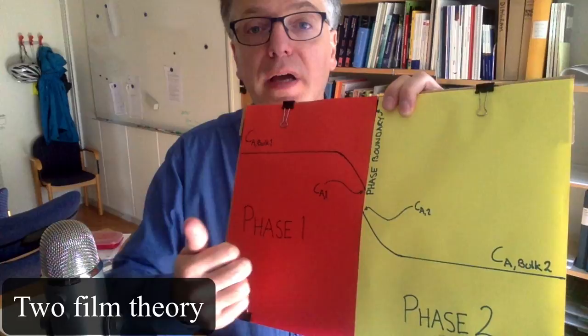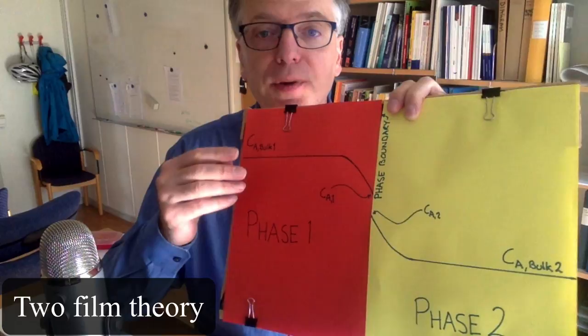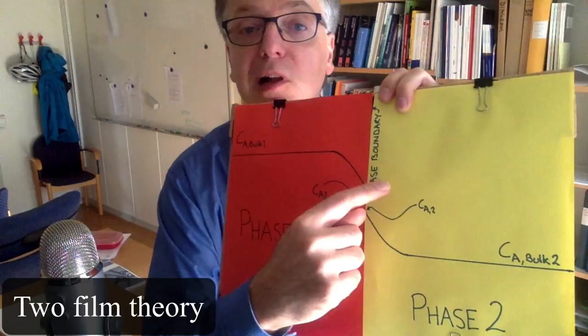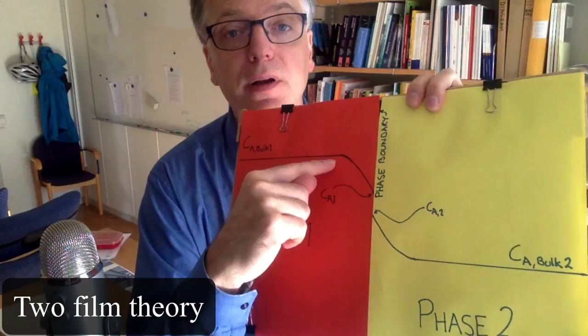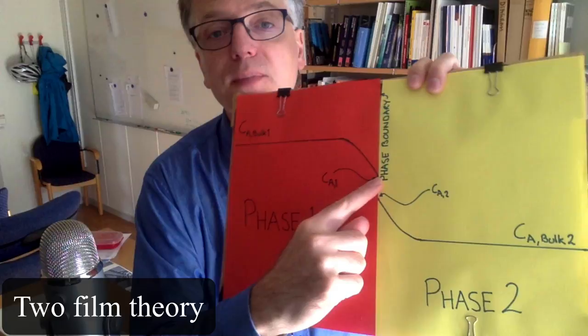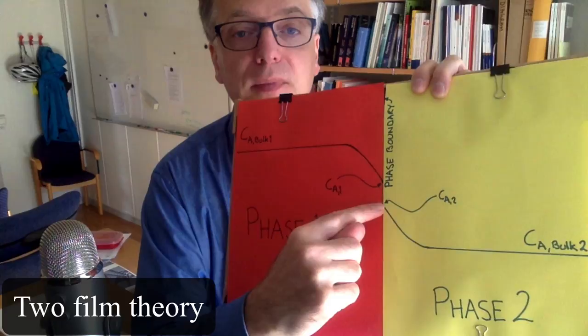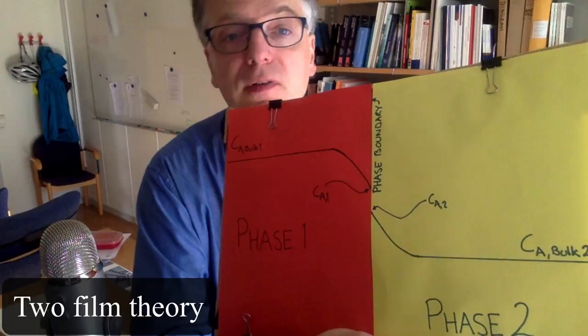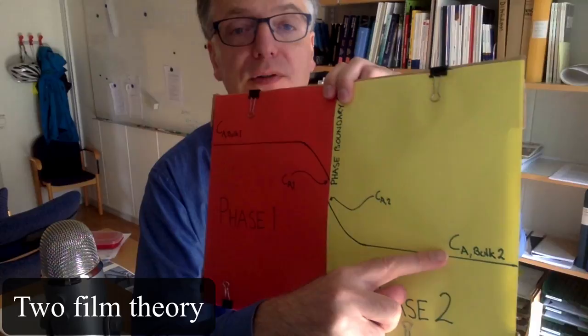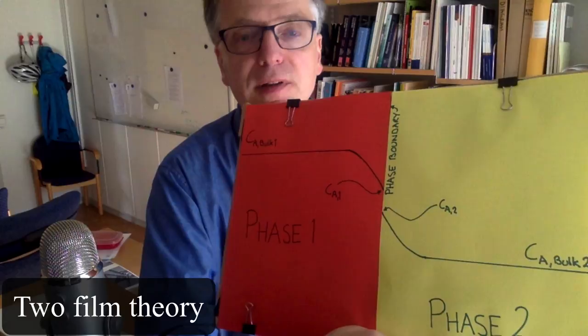To explain the two-film theory, we look at a situation where we have two different phases and transport of a substance from phase one to phase two. There is some turbulence in the two phases, so the concentration is constant. After coming close to the phase boundary, the concentration decreases, and exactly at the border there is a jump in concentration to the second phase. The relation between those two concentrations is given by an equilibrium, and far away from the border you have a constant concentration. Things happen close to the phase boundary, but it's a bit difficult to say exactly what happens.